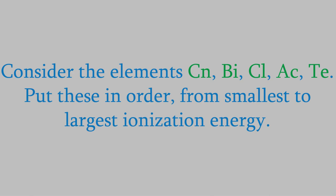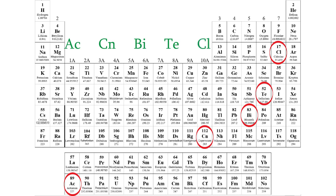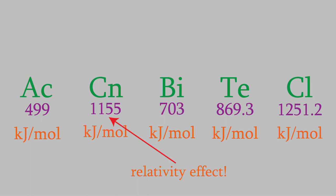Let's try an example. Suppose we have atoms of copernicium, bismuth, chlorine, actinium, and tellurium — let's put these in order from smallest ionization energy to largest. The first thing we need to do is find each of these on the periodic table. Here are copernicium, bismuth, chlorine, actinium, and tellurium. Now we just need to remember that the ionization energy gets larger as we go up and to the right. So actinium is the smallest, then copernicium, then bismuth, then tellurium, and chlorine is the largest. The actual data confirms it: actinium has the smallest ionization energy at 499 kJ per mole, and chlorine is the largest at 1251.2 kJ per mole.